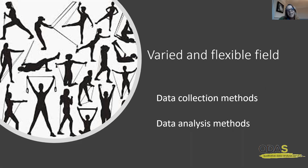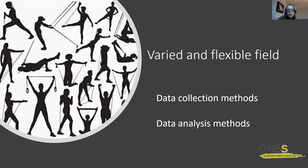In terms of data, we may be working with primary data, collecting interviews, focus groups, observations, field notes, questionnaires with open-ended questions. There's a whole range of different ways that we can collect primary data. And there's also a range of naturally occurring or secondary data that we may be working with: policy documents, newspaper articles, or social media and other web-based content.